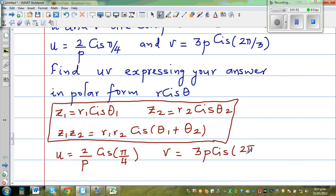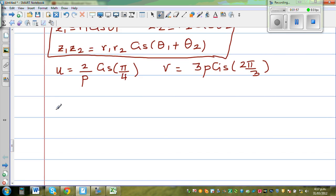So when you're multiplying these complex numbers, therefore you can say u times v is multiplying the r, the modulus, which is 2/p times 3p cis, adding the angles, which is π/4 plus 2π/3.